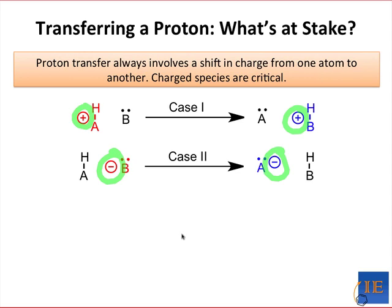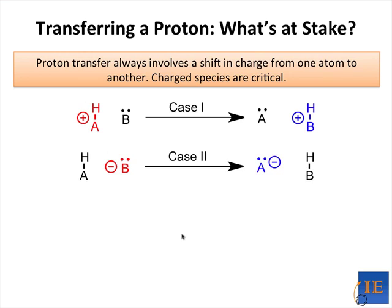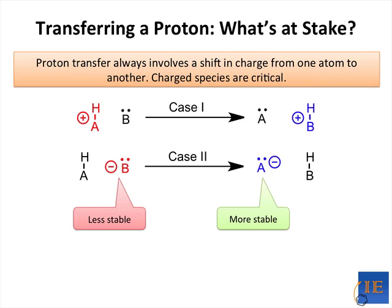The coloring here is deliberate. In order for a proton transfer reaction to proceed in the forward direction, the blue charged species must be more thermodynamically stable than the red charged species. Another way of saying that is that the blue species must be lower in energy than the red species. A key assumption here is that the black neutral species essentially all have the same energy. Using that assumption, we can ignore the neutral compounds when considering proton transfer reactions and focus only on the charged species.